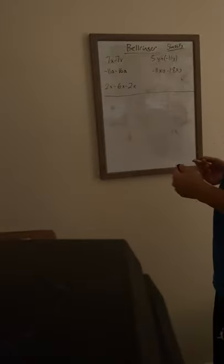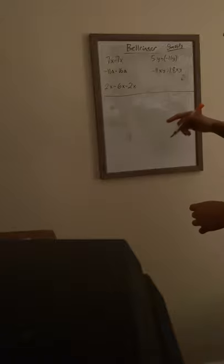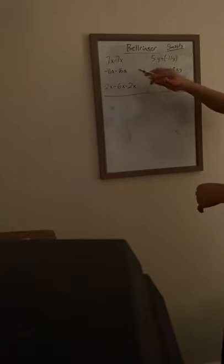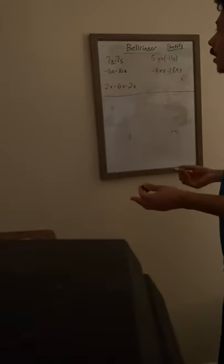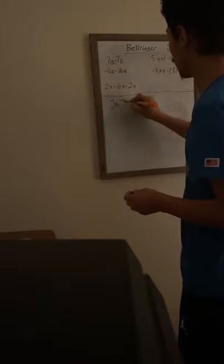When we're trying to simplify, we're trying to combine like terms. We need to see if there's a variable that is the same as the next number to simplify. So what we're going to do here is 7x minus 7x — that's just 7 minus 7, which is equal to 0.